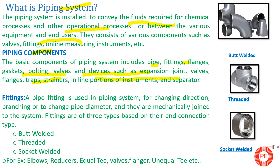What are fittings? A pipe fitting is used in a piping system for changing direction. Elbows are used for changing direction, branching, or to change pipe diameter. To change pipe diameters, reducers are used — which is the main topic of today's video. They are mechanically joined to the system, either by welding or threading.